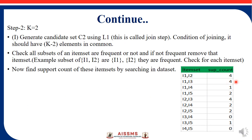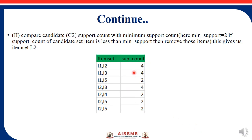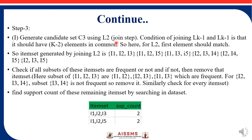Now, looking at item set pairs — I1 and I3 have a support count of 4. We calculate the support count for each pair of item sets. Those with support count less than the minimum support of 2 are not considered further — for example, I1-I4, I3-I4, and I4-I5 are dropped. After filtering, we obtain the candidate set C2 with minimum support of 2.